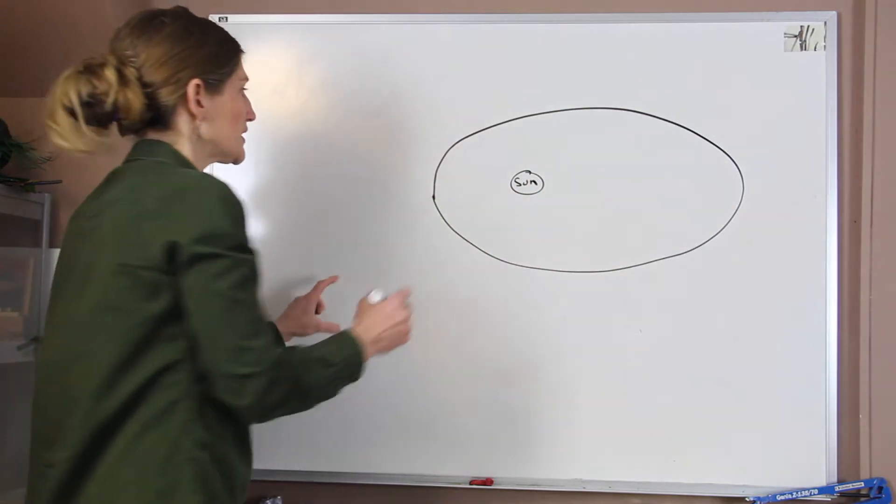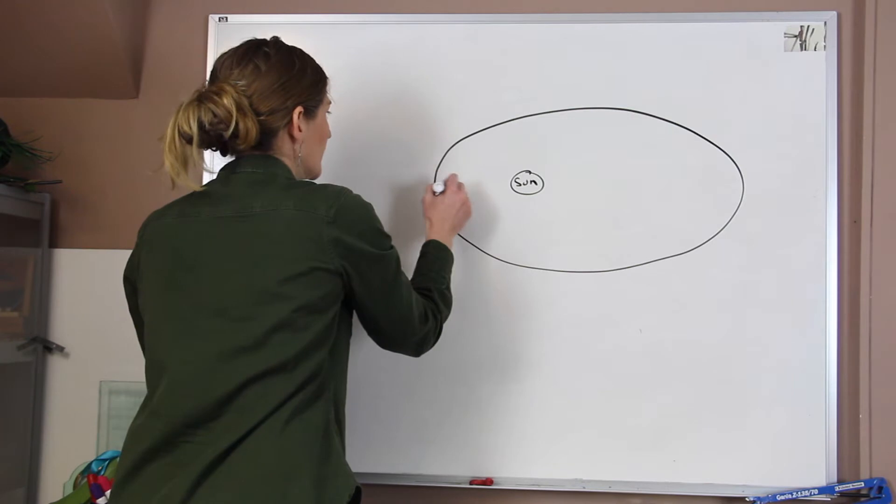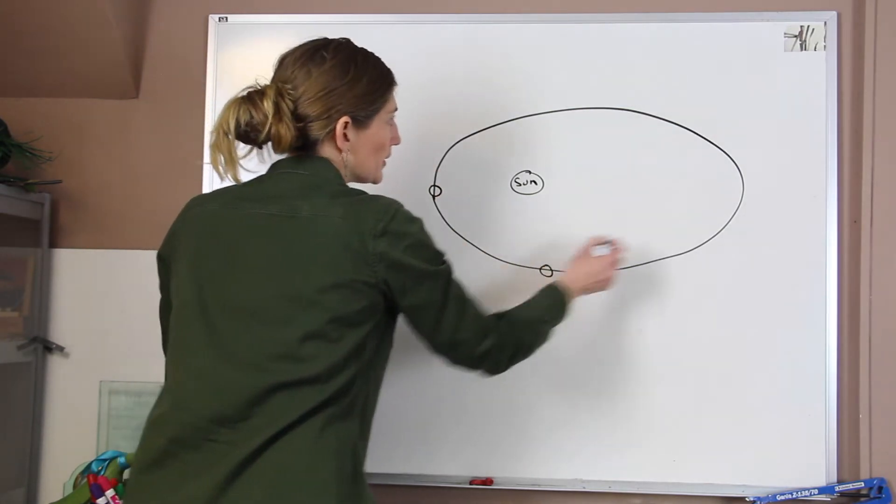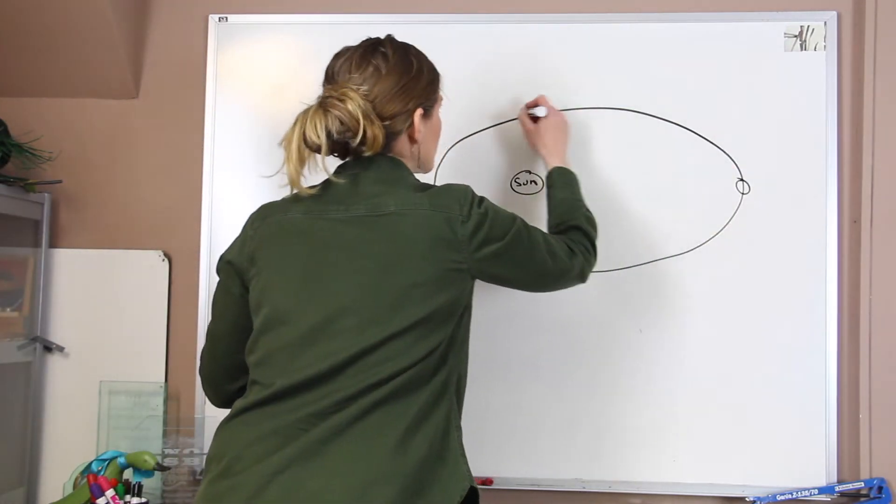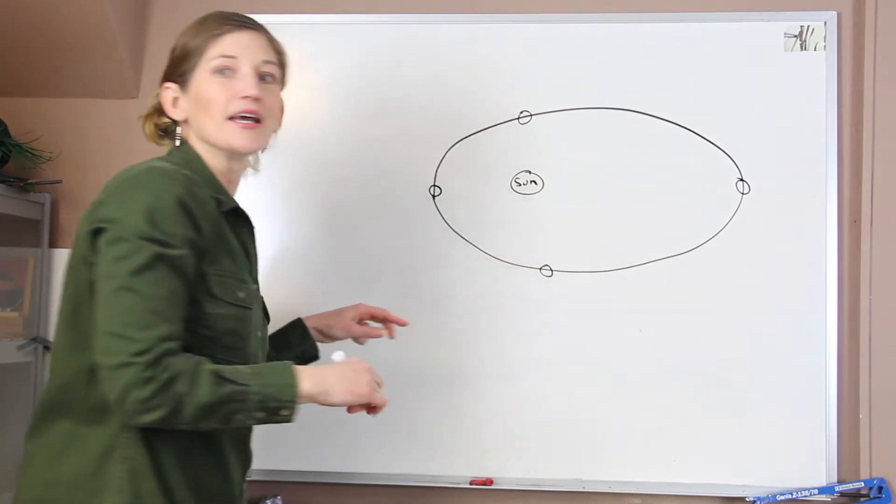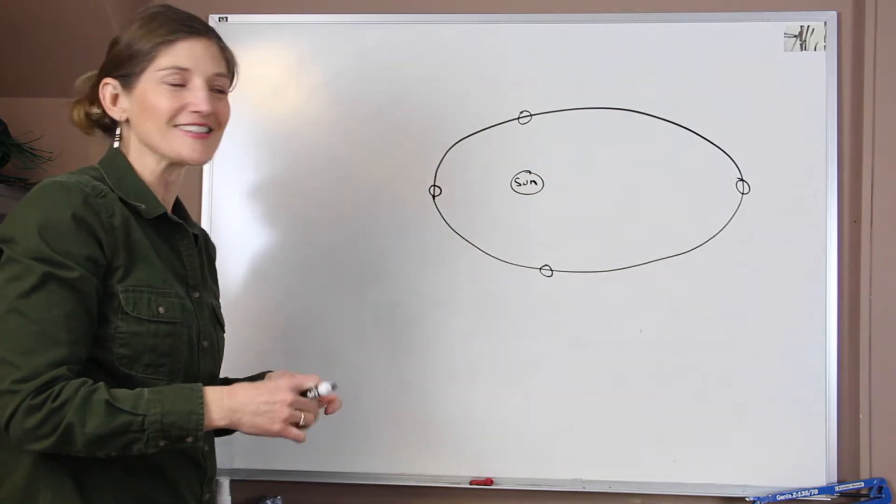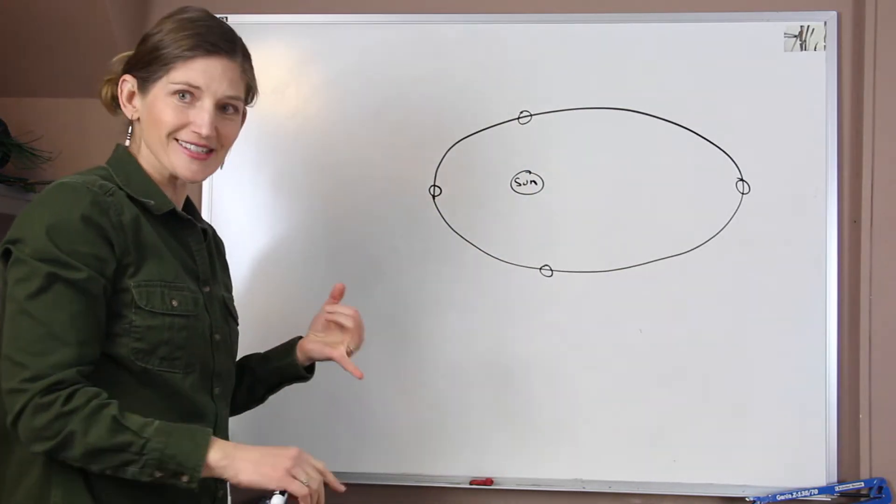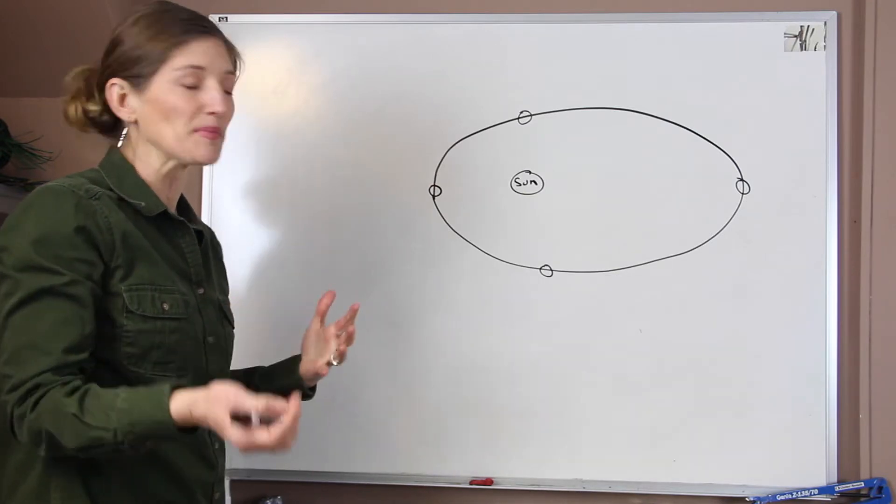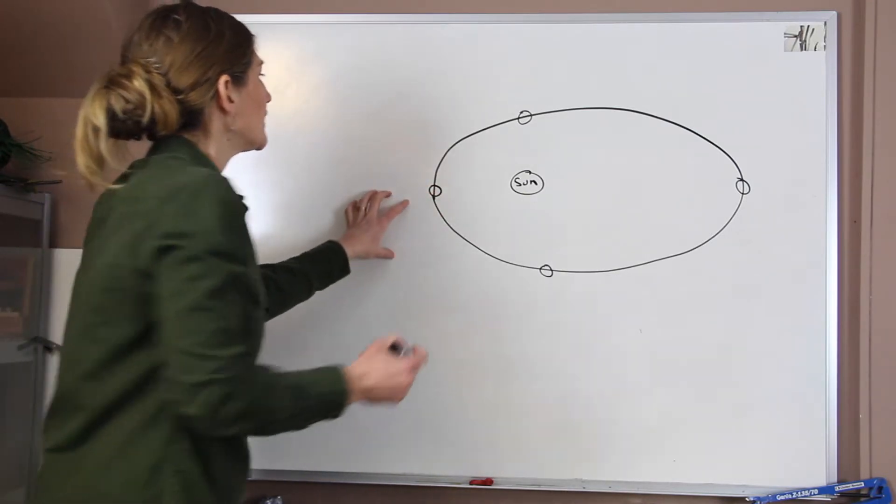Now what's really interesting, as the Earth is moving around, it has these four positions that become very important. And these are the positions that we find our solstices and our equinoxes. And they mark the passage of our seasons as the Earth goes around the sun.